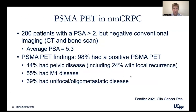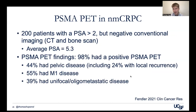Metastatic castration-resistant or M0 castration-resistant prostate cancers are patients with conventional imaging-negative disease but rising PSA in the castration-resistant setting. This was studied extensively in trials like SPARTAN evaluating apalutamide, as well as enzalutamide and darolutamide. If you do PSMA PET in these patients, essentially all of them have disease — there is no such thing as M0 CRPC. 98% had a positive PSMA PET, and 40% had oligometastatic or unifocal disease potentially treatable with SBRT, being evaluated in the PILLAR trial comparing apalutamide to apalutamide plus SBRT.